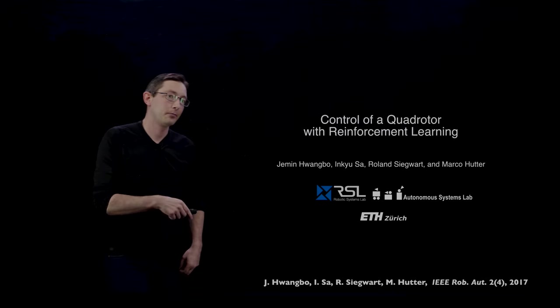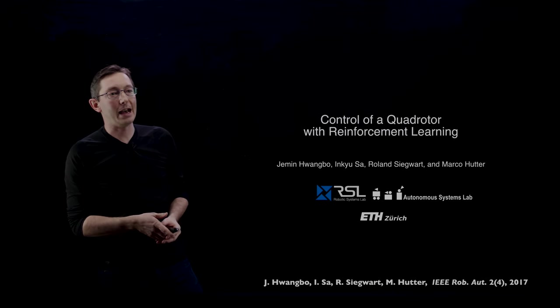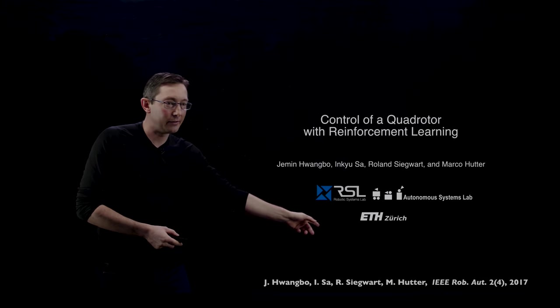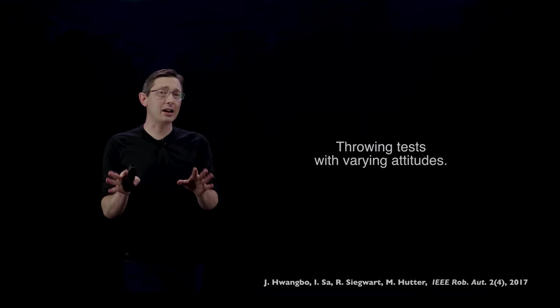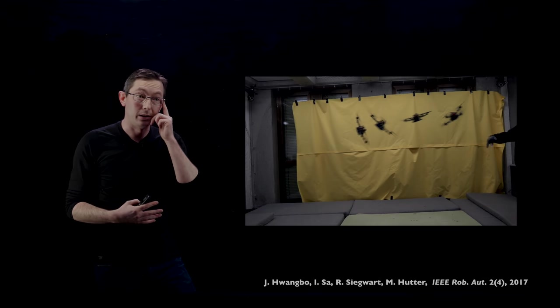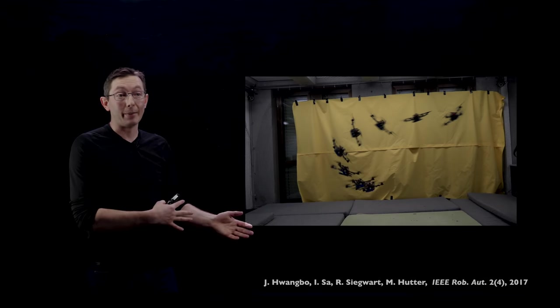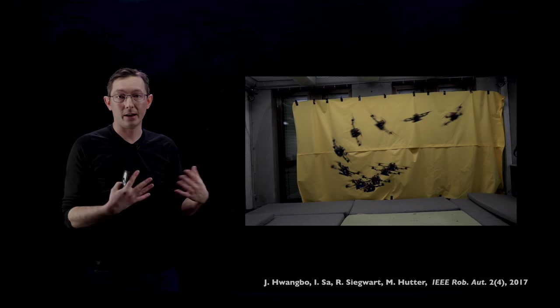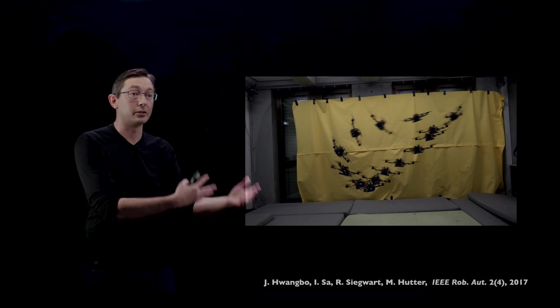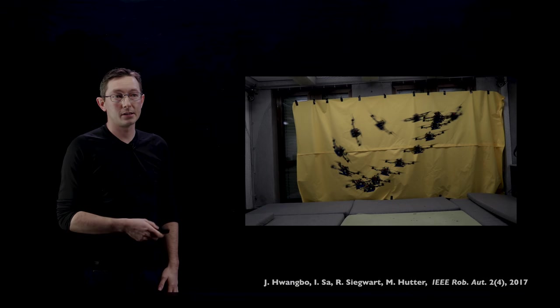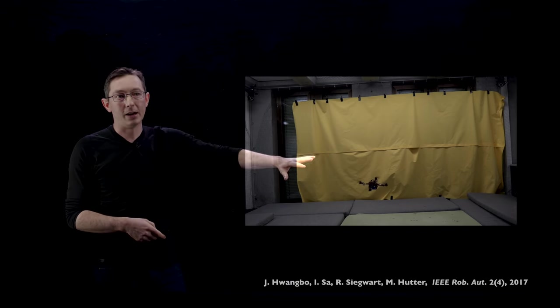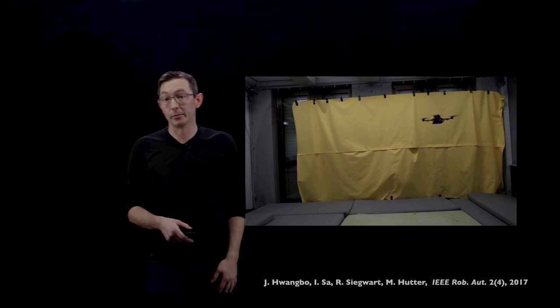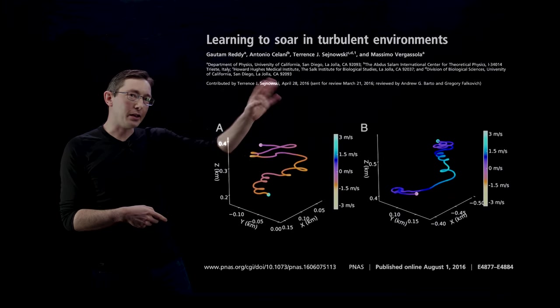Another great one, this is out of ETH 2017, control of a quadrotor with reinforcement learning. There's a lot of groups that are doing really cool stuff here—I know Jonathan How's group at MIT is doing really nice work with advanced machine learning control for quadrotors. But I think this is just a really nice example that learns these aggressive maneuvers and disturbance rejection.